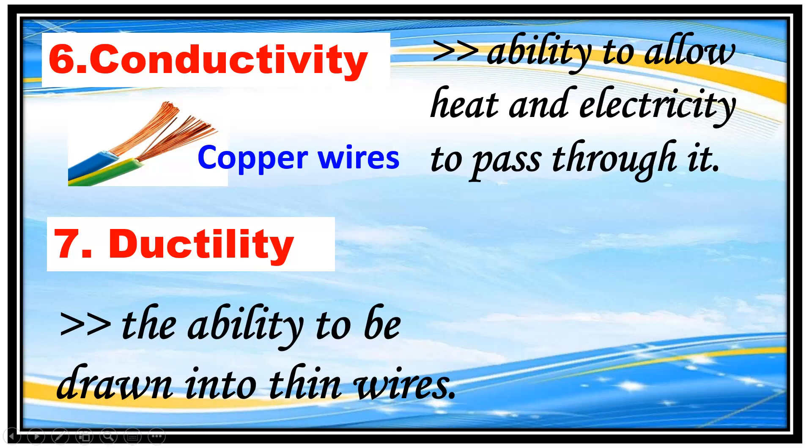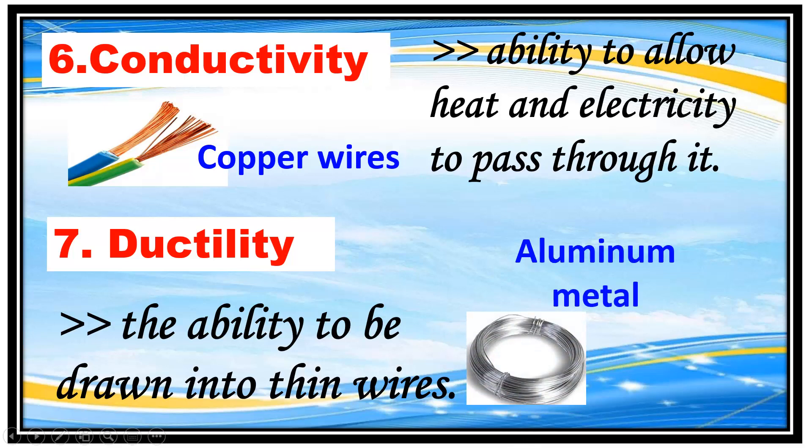Number 7 is the ability of material to be drawn into thin wires, like aluminum and metals.